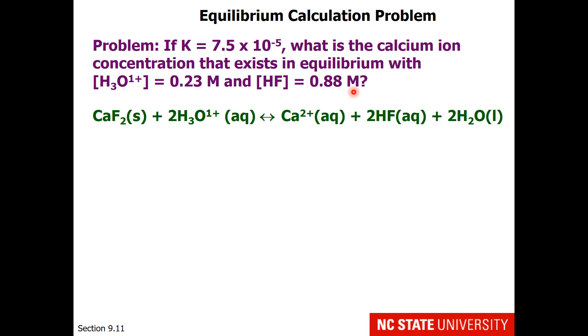This might be a situation where we cannot measure the calcium 2 plus ion directly, but we can measure the strong acid and the weak acid. First, we should write our equilibrium expression. So that would be products over reactants raised to their coefficient. The calcium 2 plus ion will be to the first power. Hydrofluoric acid will be squared. We will ignore the water as solvent.